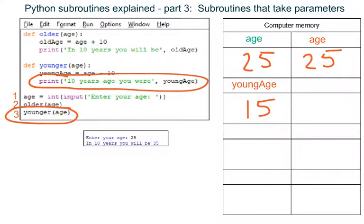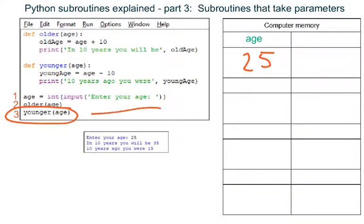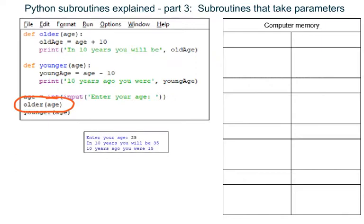The data in local variable young_age is printed on the screen. The subroutine has finished running, so Python destroys the local variables age and young_age and goes back to the place in the program where the subroutine was called. Make sure you understand and remember that the word age inside the brackets here tells Python that we want to send the data stored in variable age to subroutine older so that the subroutine can use this data.